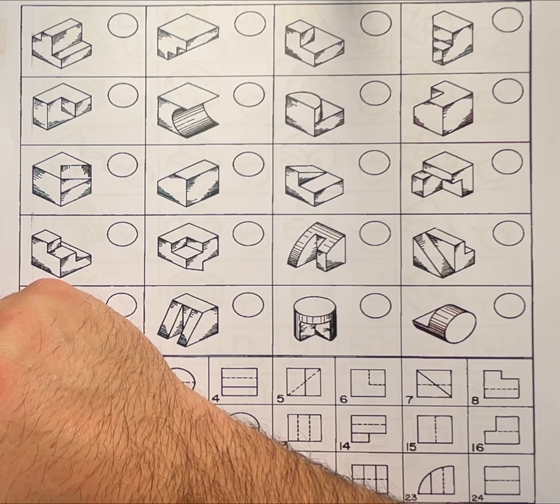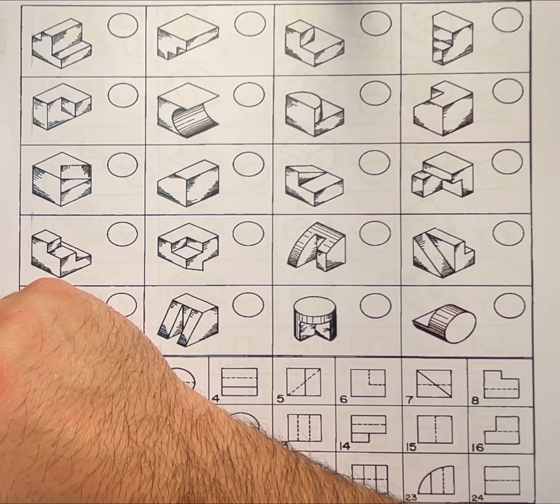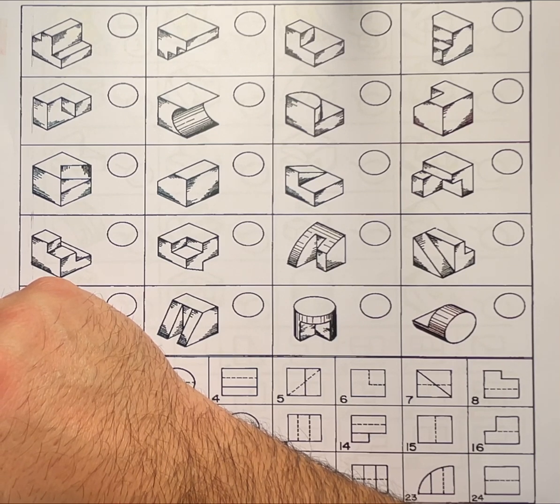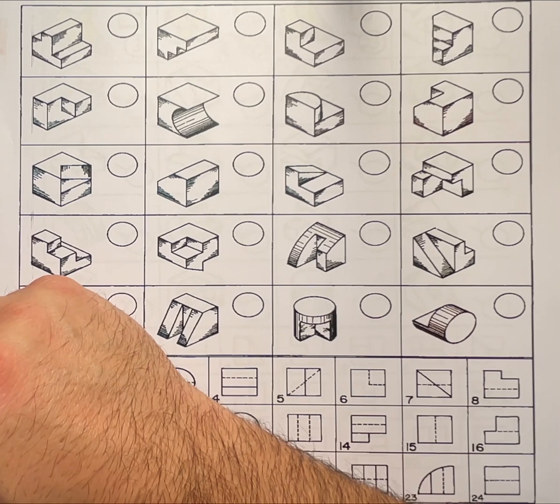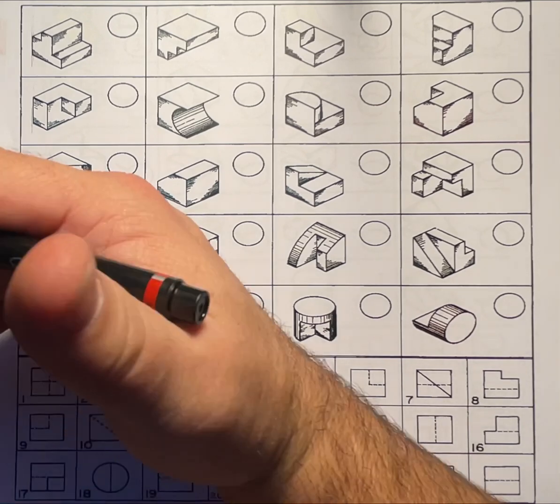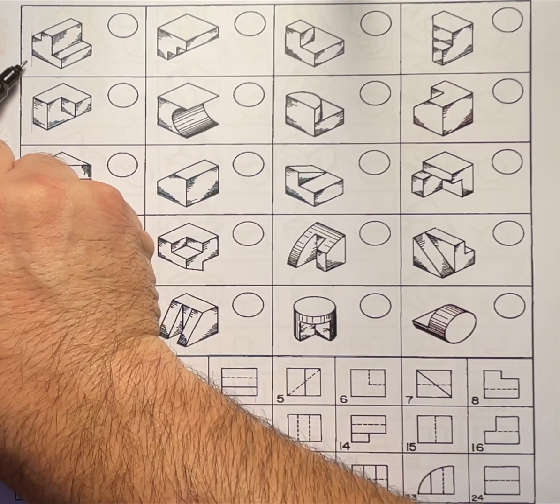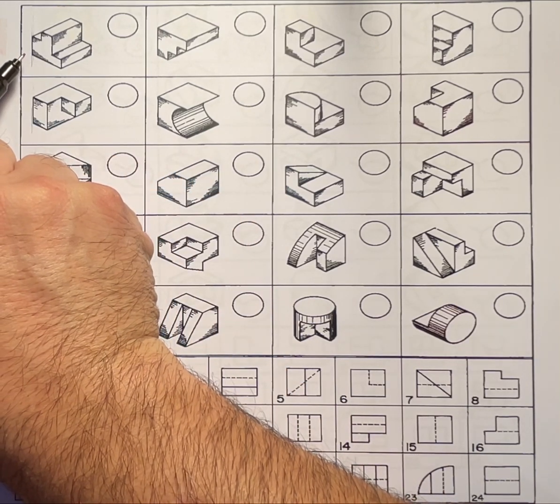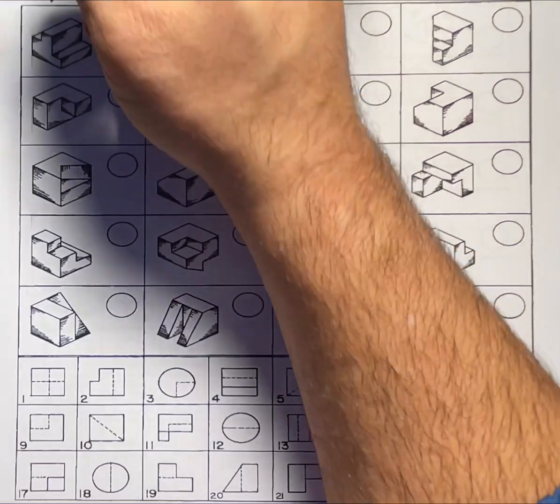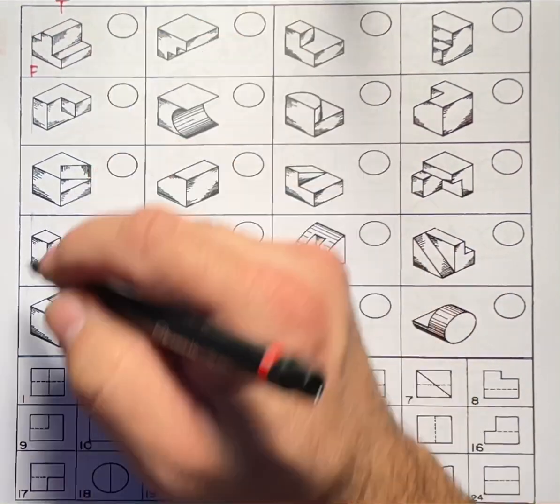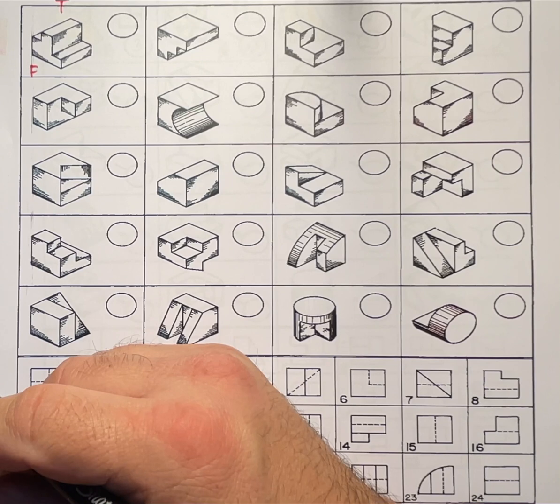Now let's remember a hidden line represents a surface or a part that is behind the view that you're looking at. So in this case in the front view there is nothing that's going to be hidden. Again in the top view there is nothing that's going to be hidden.